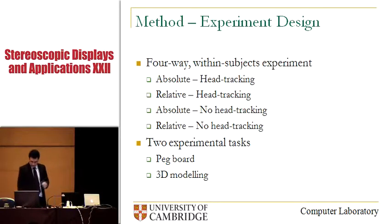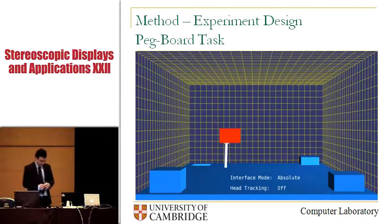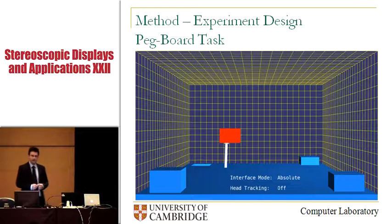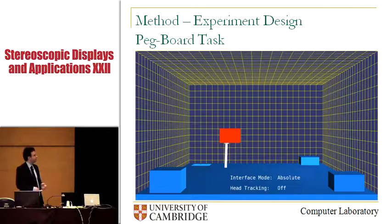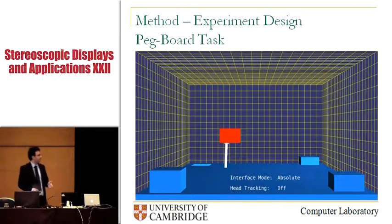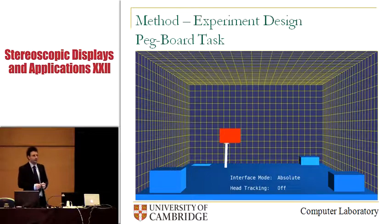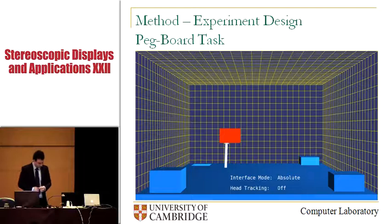The pegboard task was the first task, and it captured quantitative data about the performance of our participants in simple peg-in-hole assignments. You basically had a peg, you could pick it up, and you were supposed to put it in the hole as accurately and as quickly as possible.